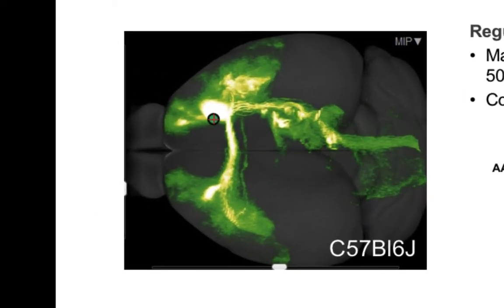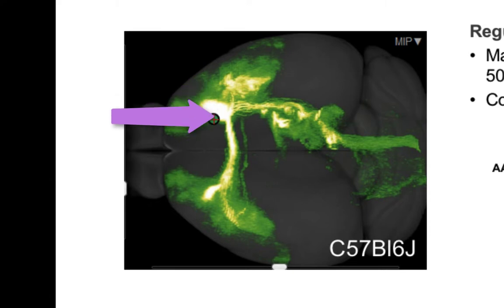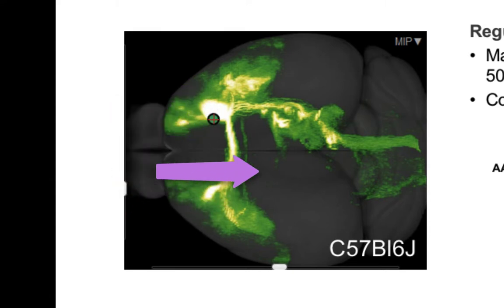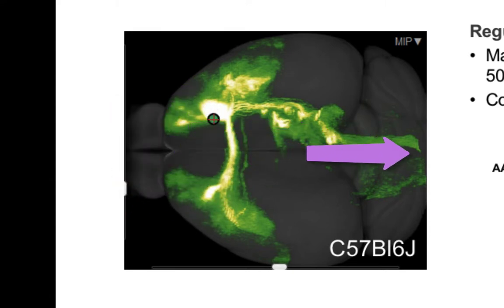This image is an example of what the raw data looks like, with an injection in the motor cortex showing projections to other regions of the cortex ipsilaterally, to the contralateral side, to subcortical regions, and to the brain stem to peripheral targets.